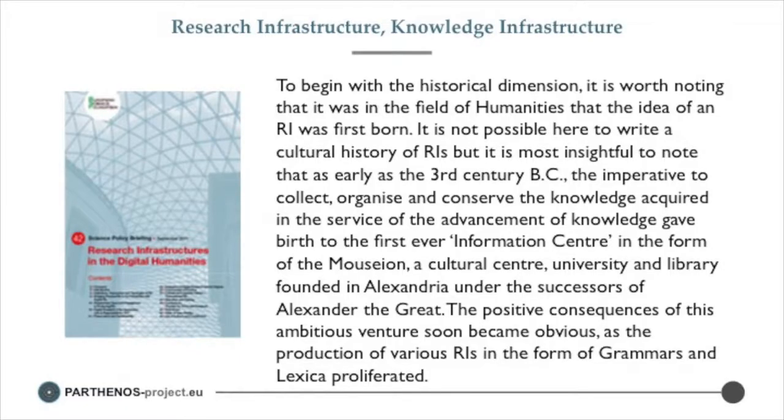Before we can get to the modern era, we have to look at where this whole idea comes from. It's a very interesting idea that comes across in this particular ESF report, because they actually look at research infrastructure as not something that came up specifically in the sciences. If you trace it all the way back, the beginning of the idea of a research infrastructure or knowledge infrastructure really goes back to the Museon and the Library of Alexandria — something that originally came from the ownership of the humanities.